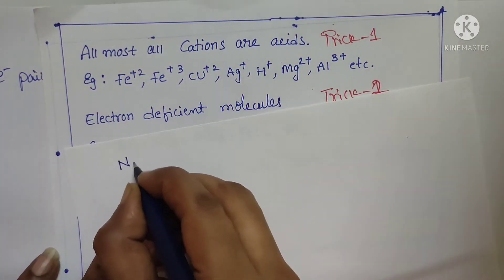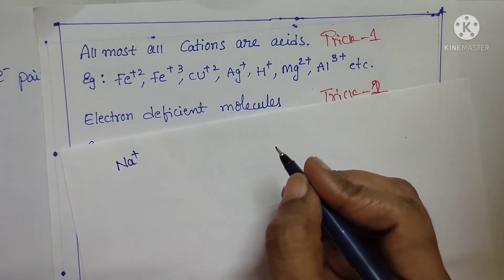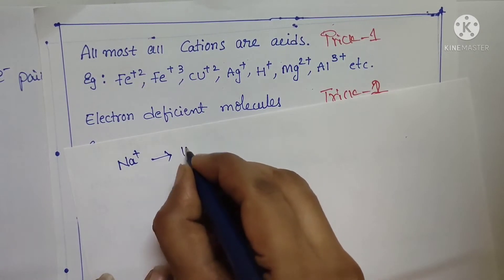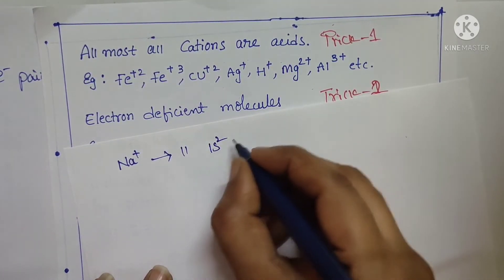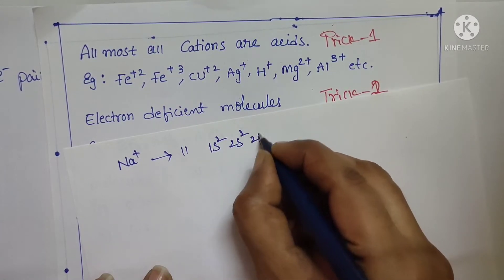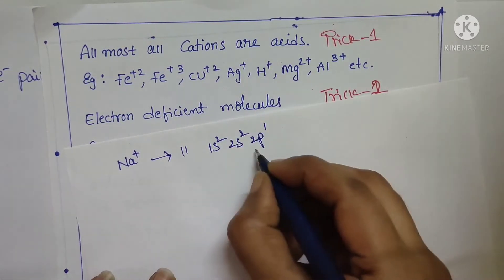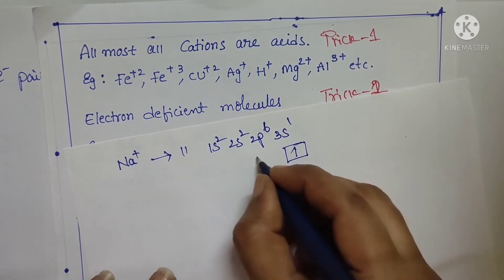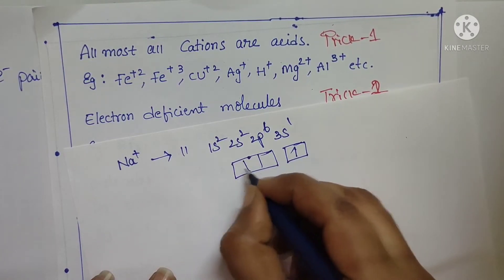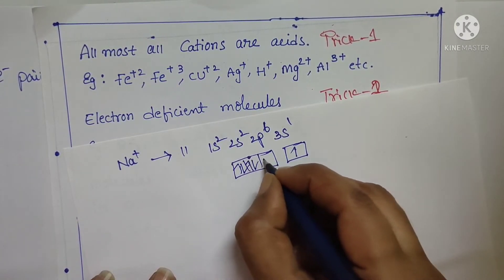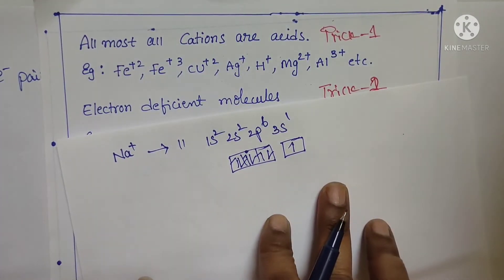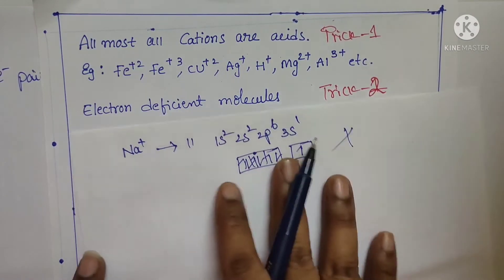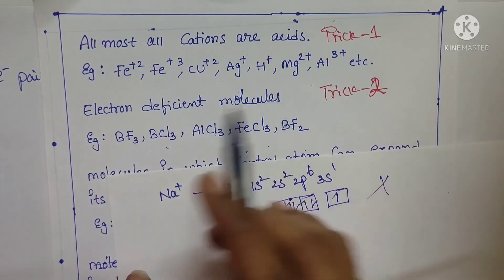For example, Na+ (sodium) cannot act as a Lewis acid. Sodium has atomic number 11, with electronic configuration 1s2, 2s2, 2p6, 3s1. The 2p orbital is completely filled with 6 electrons. There is no vacant orbital to accept an electron pair, so sodium cannot accept electrons. Therefore Na+ is not a Lewis acid. This is trick number 2: electron deficient molecules.